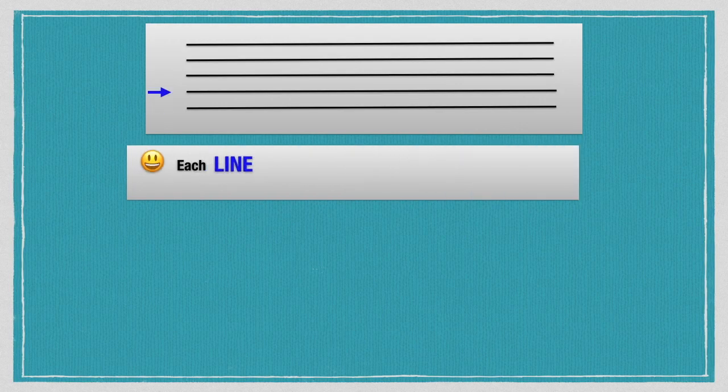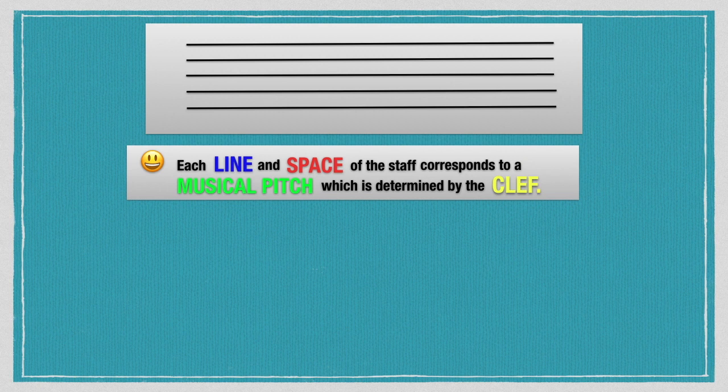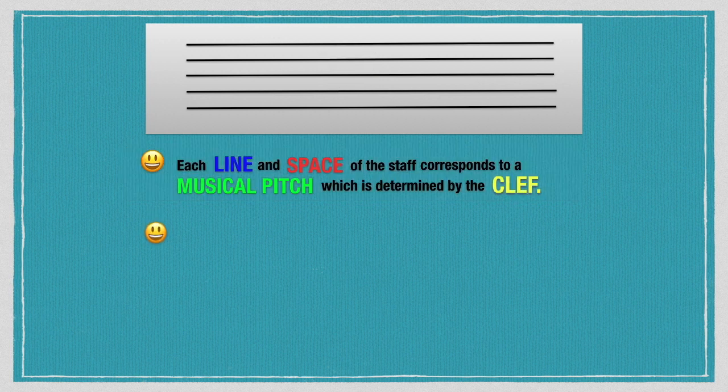Each line and space of the staff corresponds to a musical pitch which is determined by the clef. Those are the treble clef or G clef, or the bass clef or an F clef.